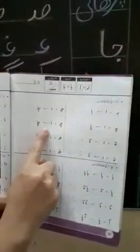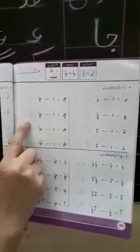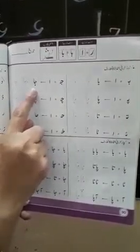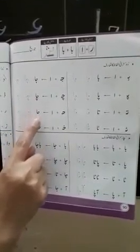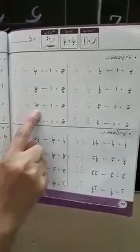It's your reading time, students. Take out your Jughno Urdu Amalekitaab and open page number 90. Today your reading is this one. Now we are going to read this. Now please look at the board. This is your reading.